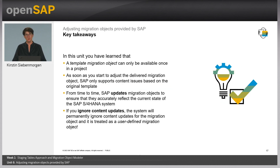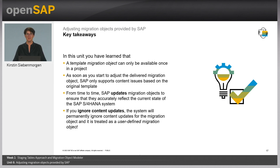This ends Unit 6. You have learned that a template migration object can be available in a project only once. If SAP updates a migration object, you can ignore the content update, but the migration object is then treated as a user-defined migration object. In our next unit, you will learn how to create your own migration object. I hope you enjoyed this session — see you in our next unit.